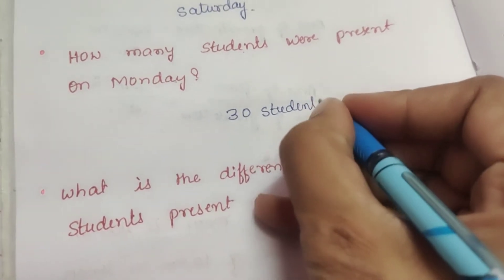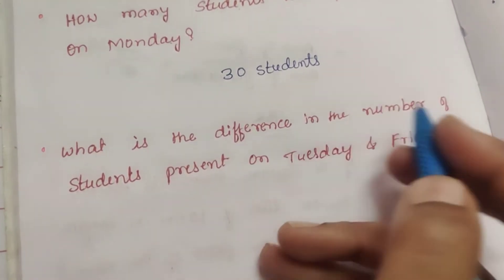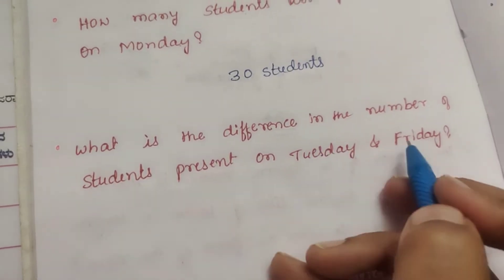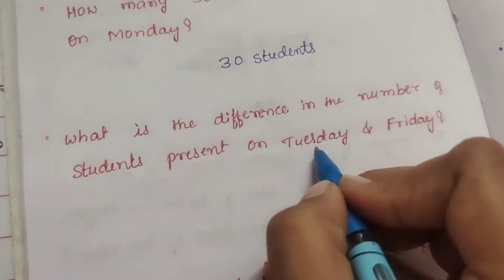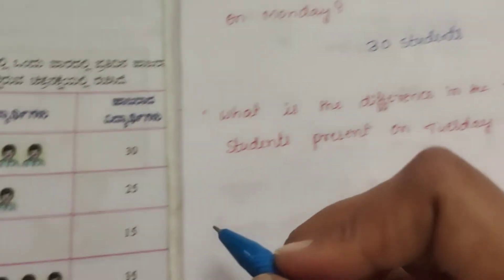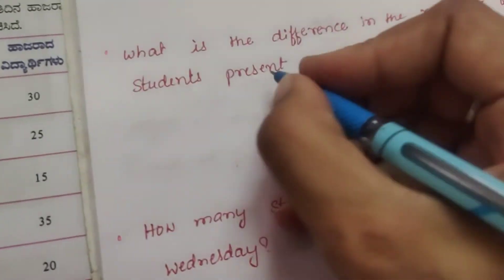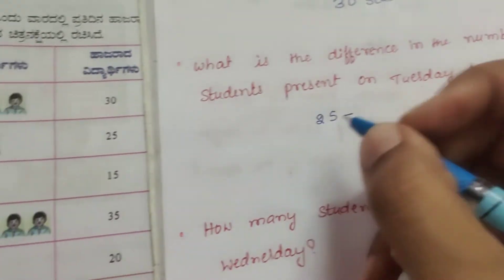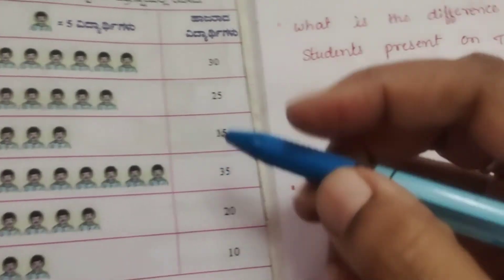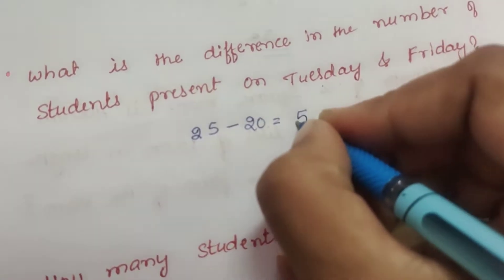Next question: What is the difference in the number of students present on Tuesday and Friday? Tuesday had 25 students present, and Friday had 20 students present. So 25 minus 20 equals 5 students difference.